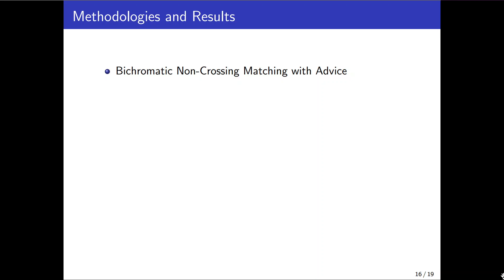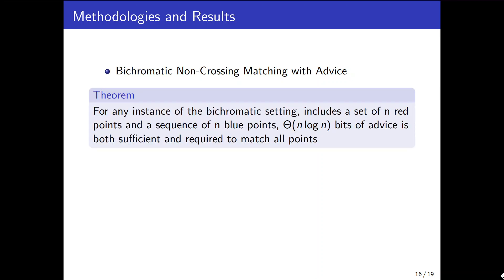And finally in the last part we studied the bichromatic case under the advice setting and proved theta of n log n bits is both sufficient and required to reach to the perfect matching. The upper bound is easy to get given that you can explicitly indicate the red partner of each blue point in an optimal matching with O(log n) bits of advice.